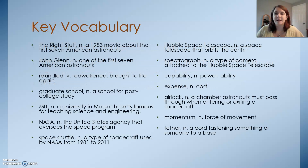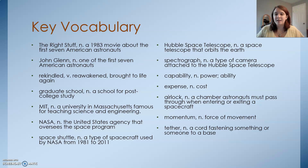Some key vocabulary for today's lesson: The Right Stuff — a 1983 movie about the first seven American astronauts. John Glenn — one of those seven American astronauts. Rekindled — reawakened, brought to life again. Graduate school — a school for post-college study. MIT — a university in Massachusetts famous for teaching science and engineering. NASA — the United States agency that oversees the space program. Space shuttle — a type of spacecraft used by NASA from 1981 to 2011.